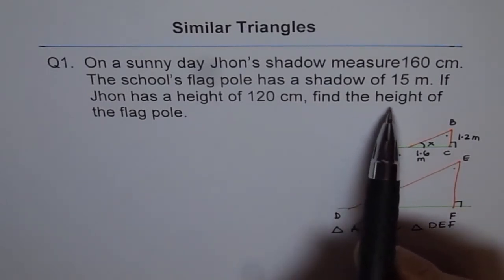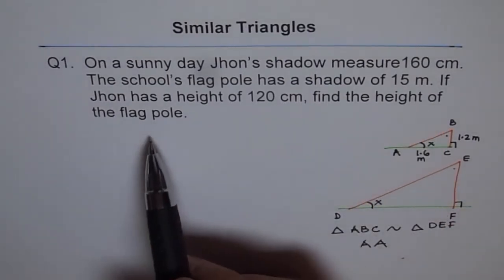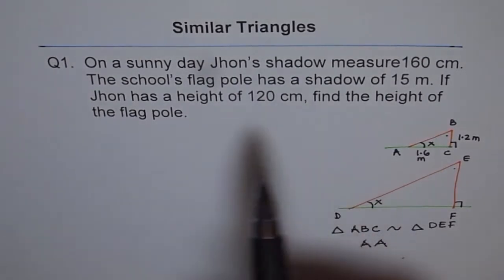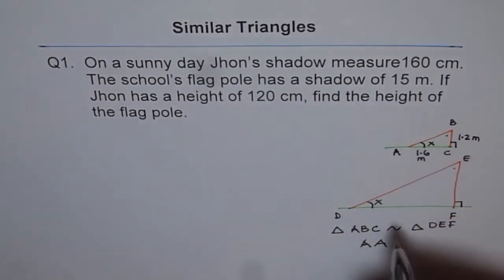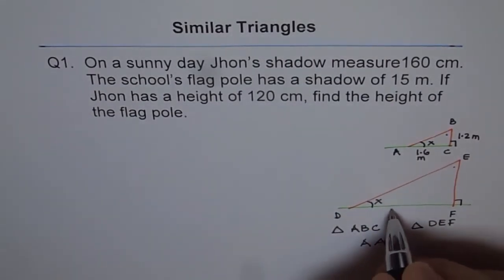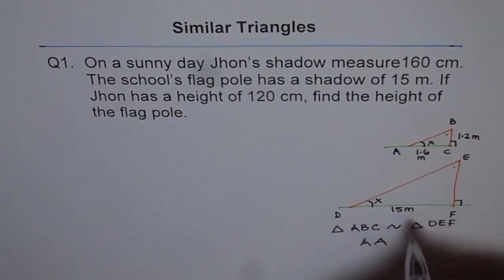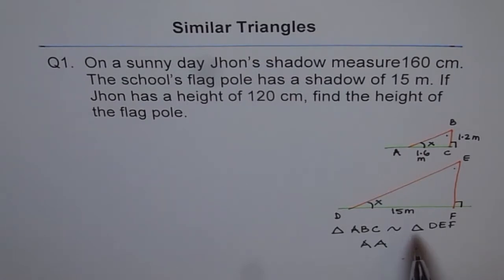Find the height of flag, right? Now it says, school's flag pole has a shadow of 15 meters, right? So we know this length is 15 meters. Correct? Since the triangle ABC, which resulted from John's shadow, is similar to the triangle DEF, which is flag's shadow, their corresponding sides are in fixed ratio.